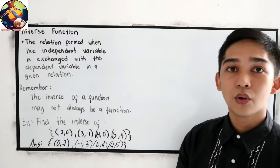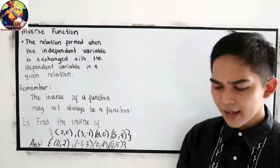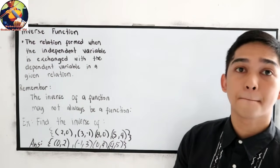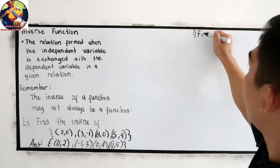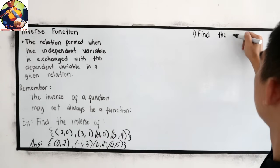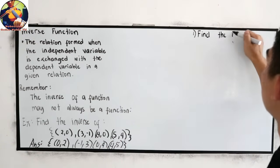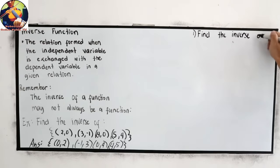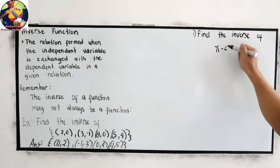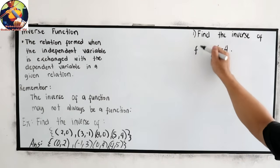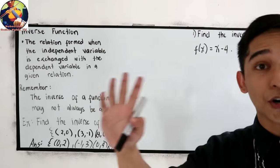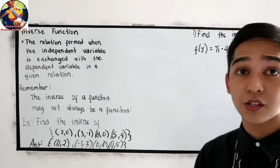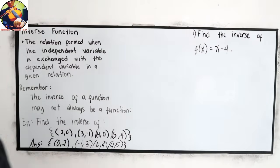What if we have an equation? Let's look at example number 1: find the inverse of f(x) = x minus 4. We have four steps to find the inverse of a function when the given is an equation.